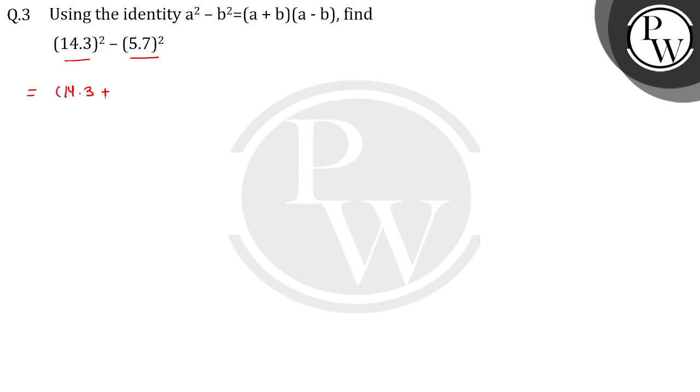14.3 and 5.7. So 14.3 minus 5.7, we have to find this. 7 plus 3, then 14 plus 5 plus 1 equals 20. Here we have to find this.